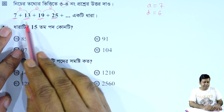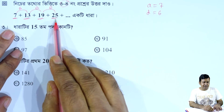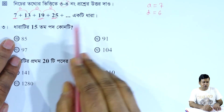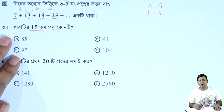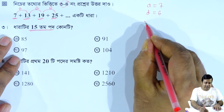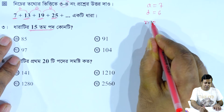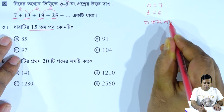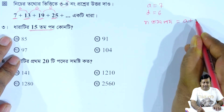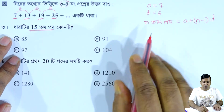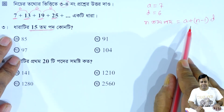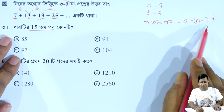So, we have the series: 7 plus 13 plus 19 plus 25 plus dot dot dot. We need to find the nth term. We know that for an arithmetic progression, the nth term formula is: a plus n minus 1 into d.